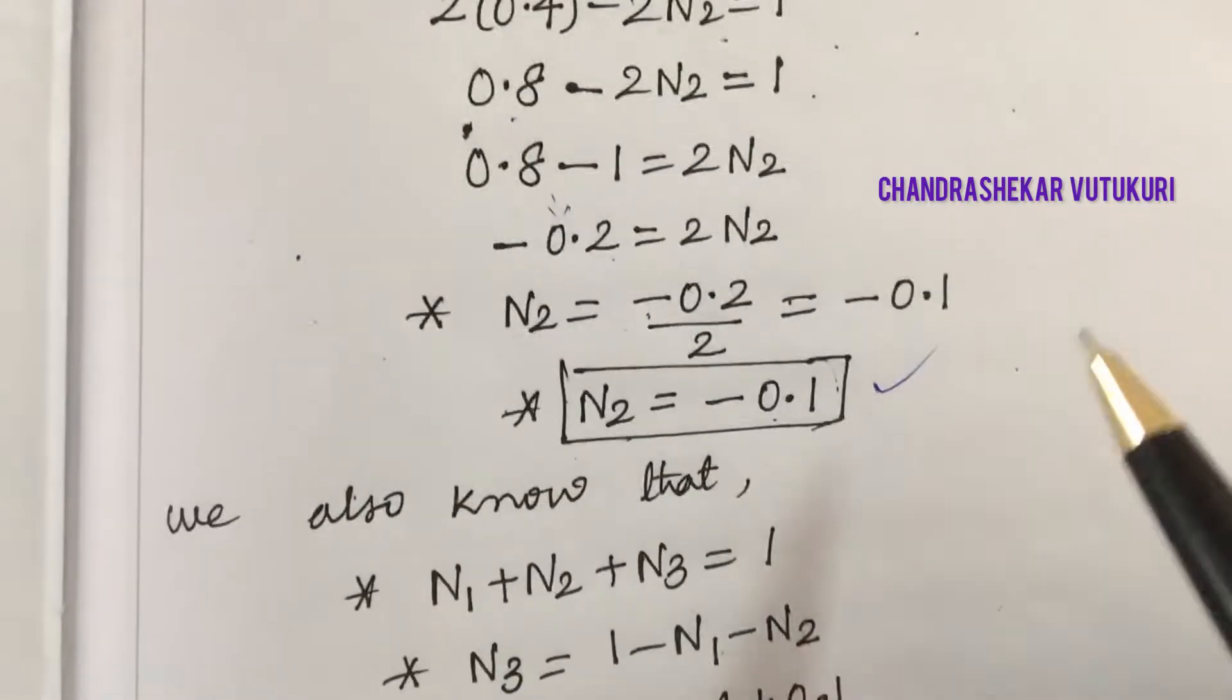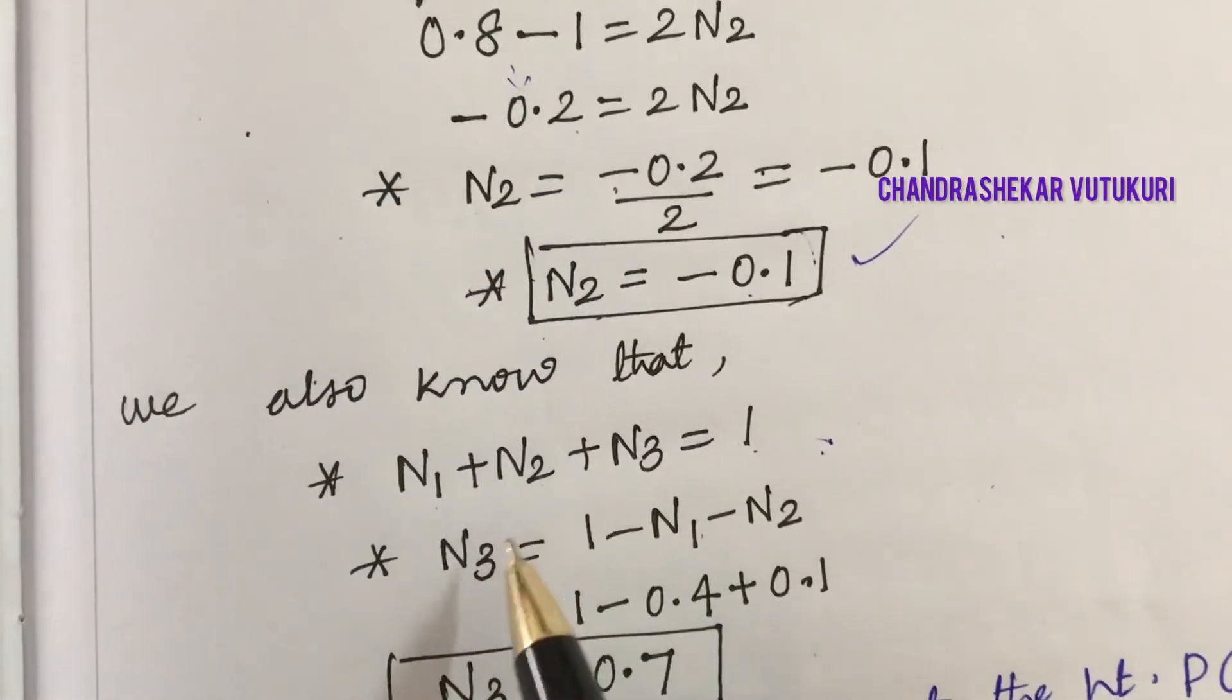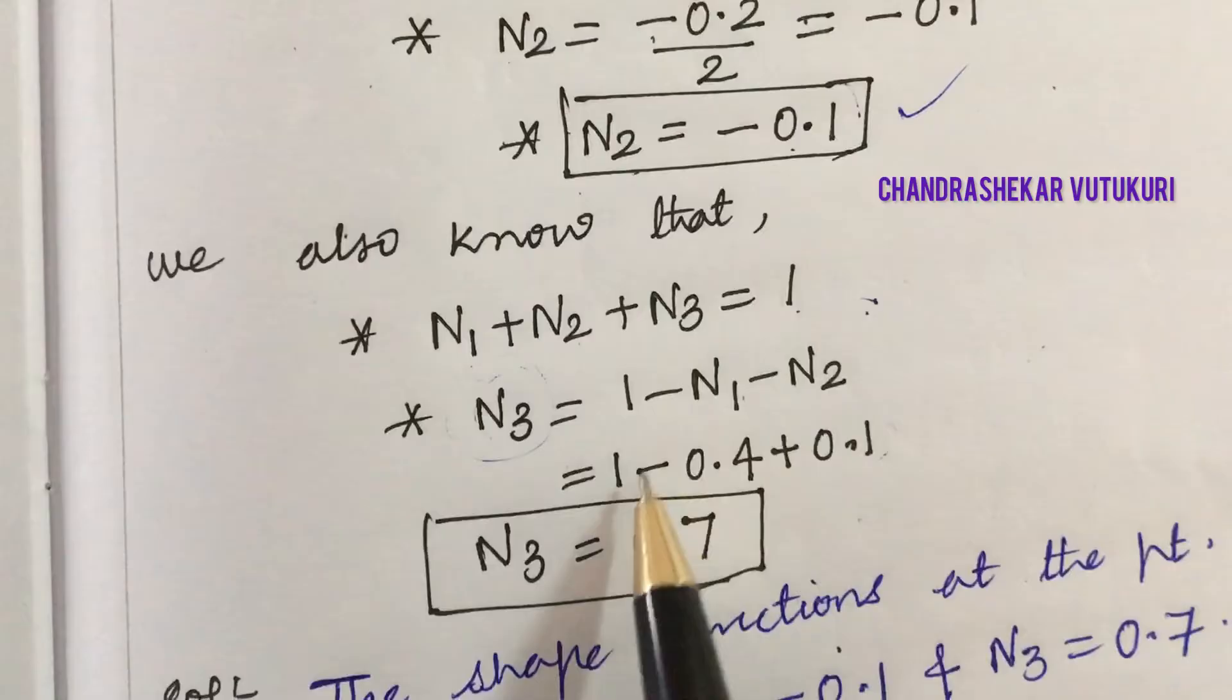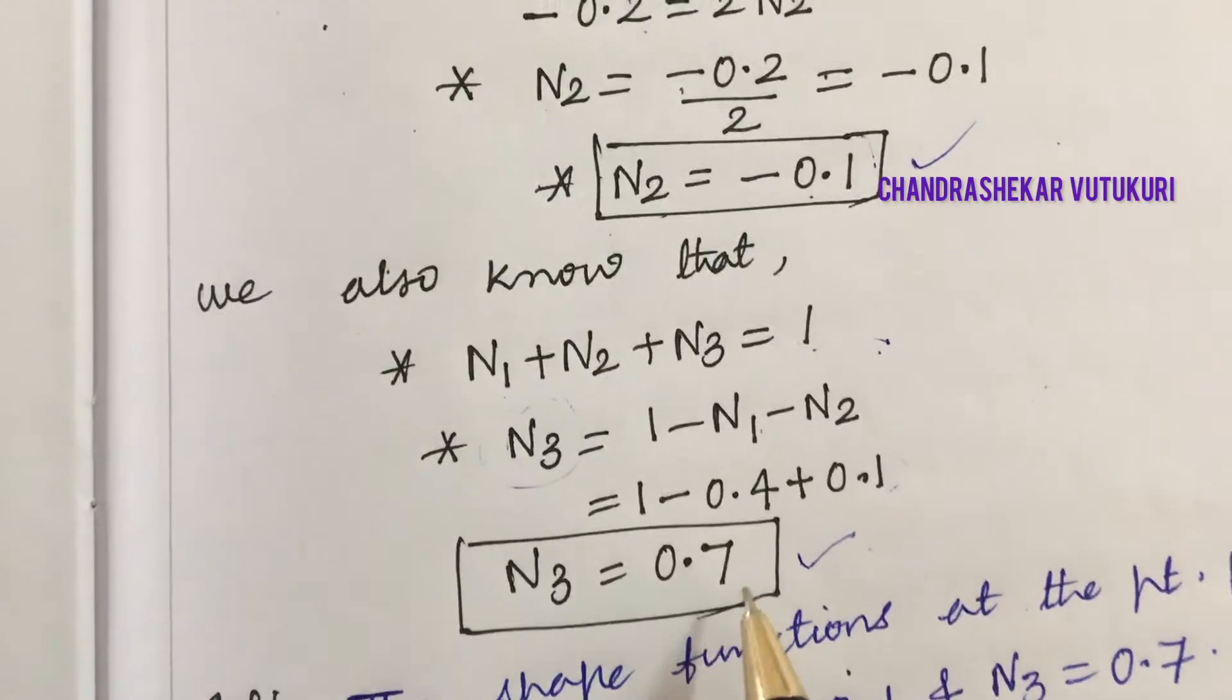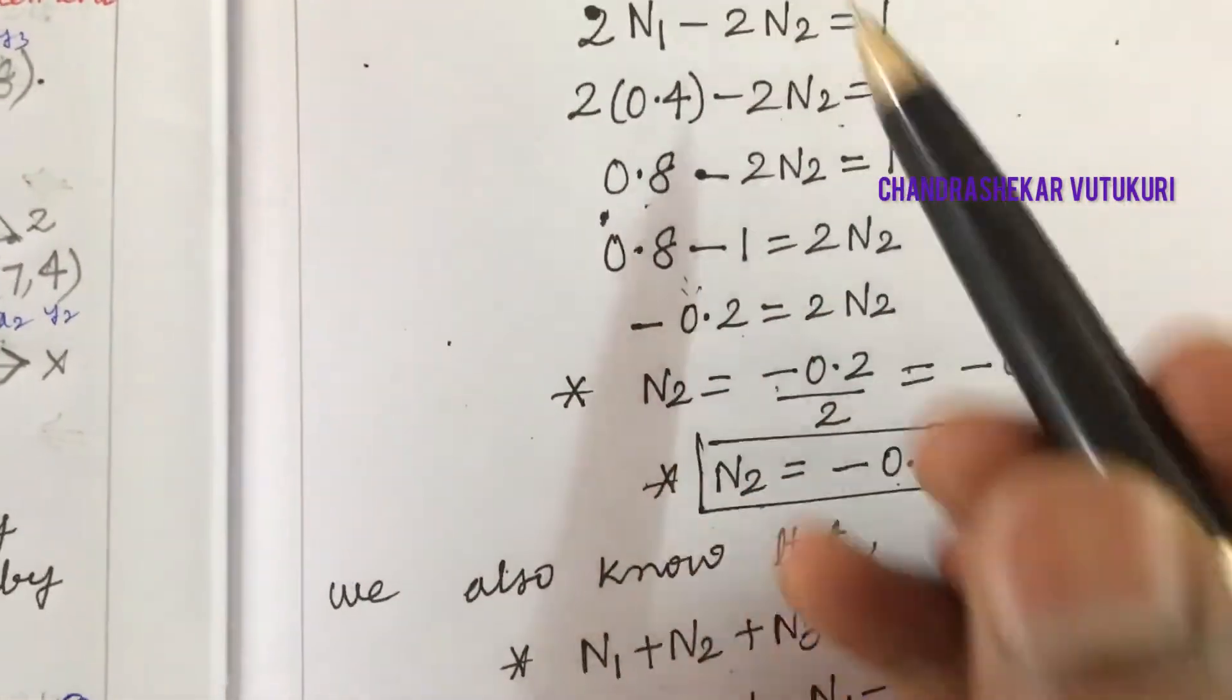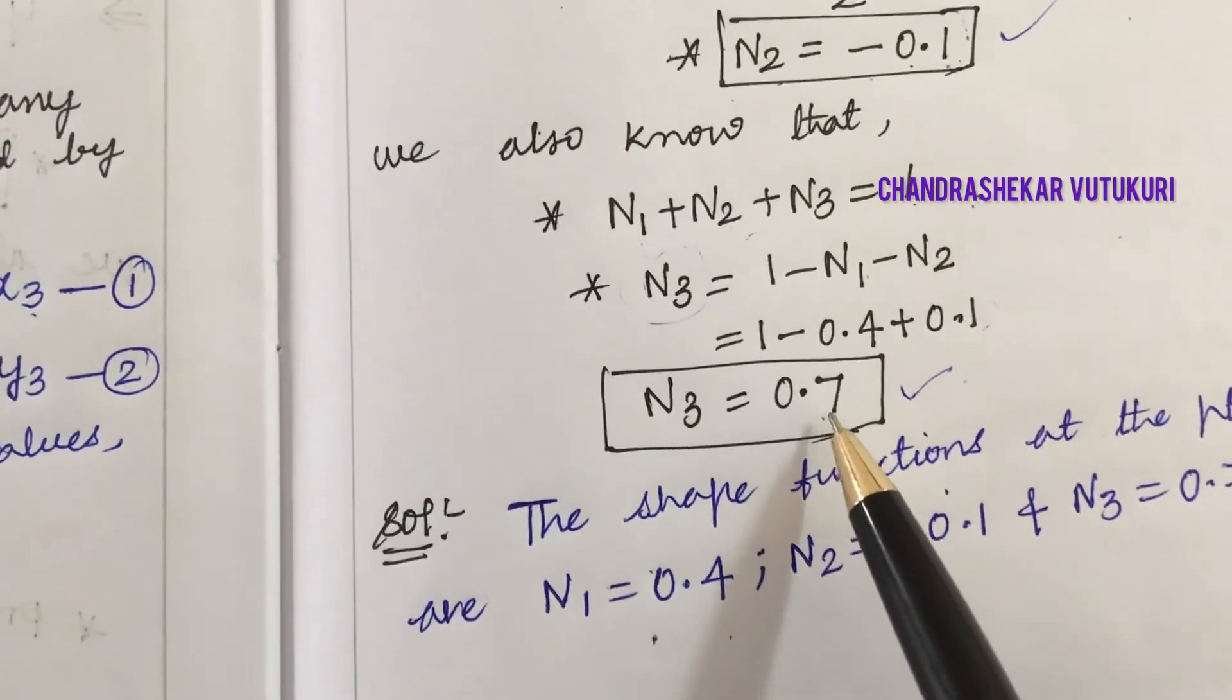As per the shape function property, we know that the sum of the shape functions equals 1. We have N1 plus N2 plus N3 equals 1. We've worked out N1 and N2, so substitute these values. Upon calculation, N3 equals 0.7. To verify: 0.4 minus 0.1 plus 0.7 equals 1.